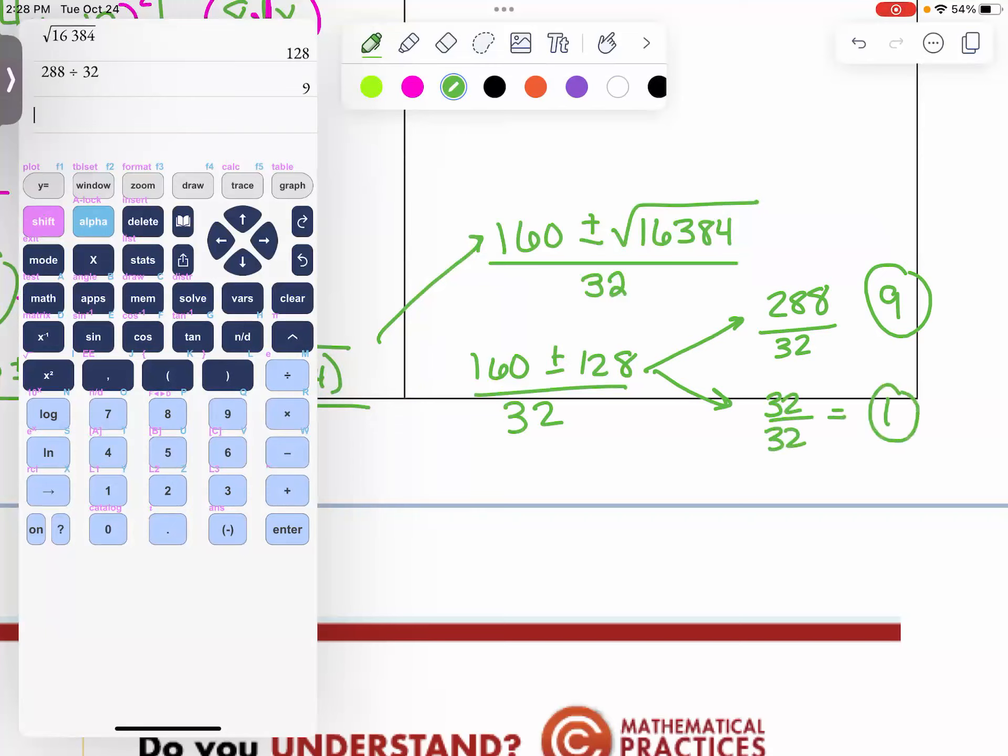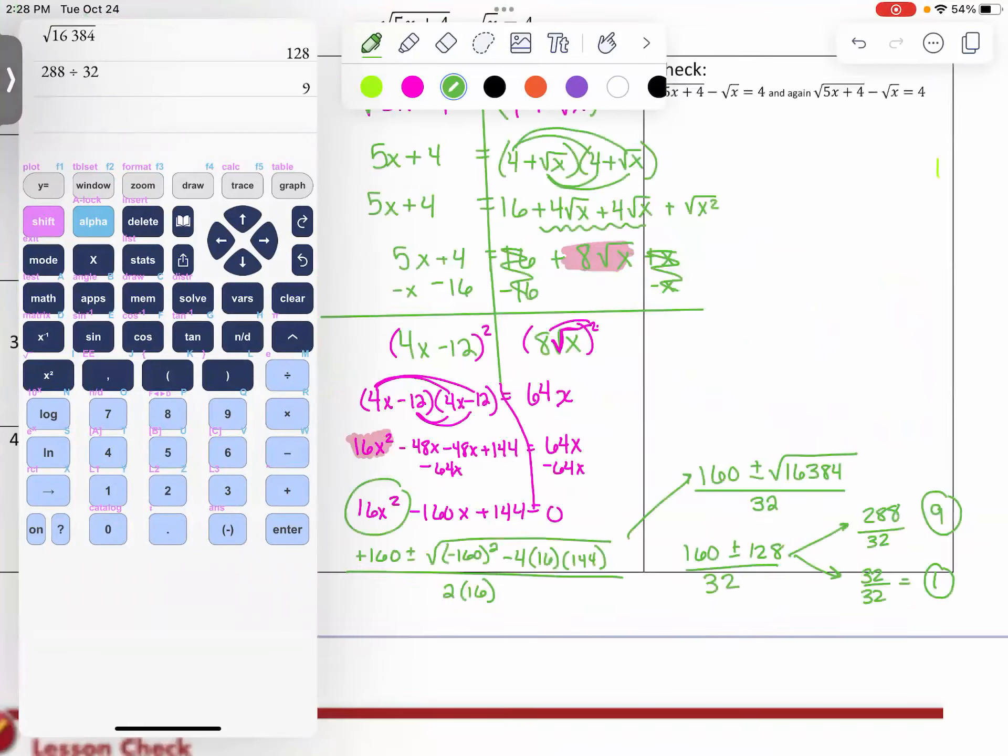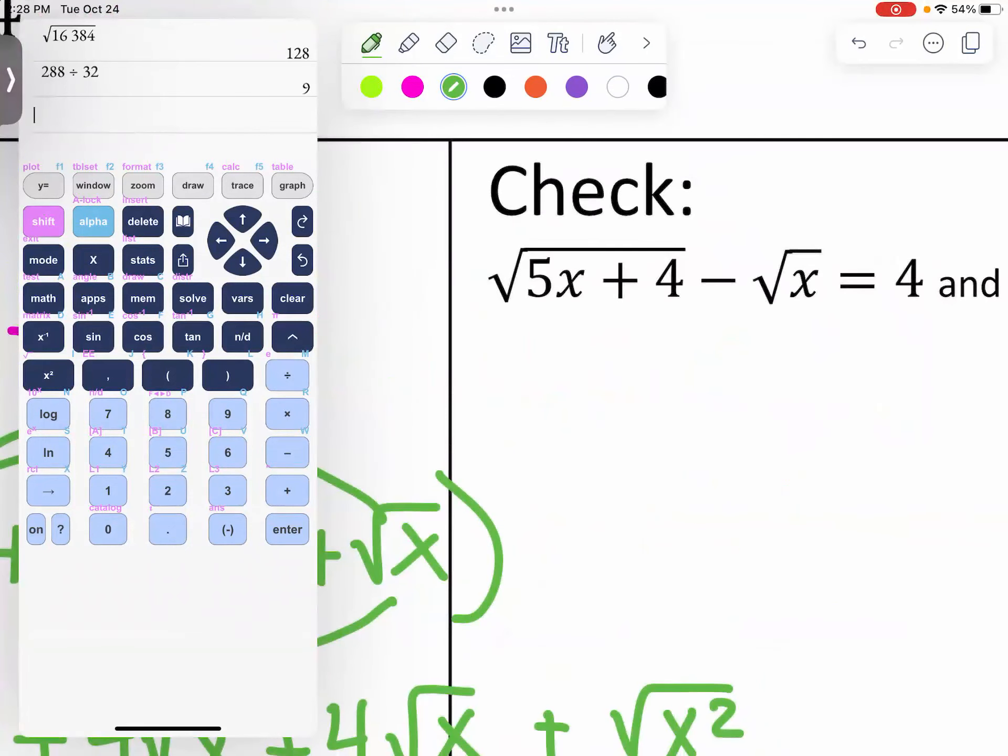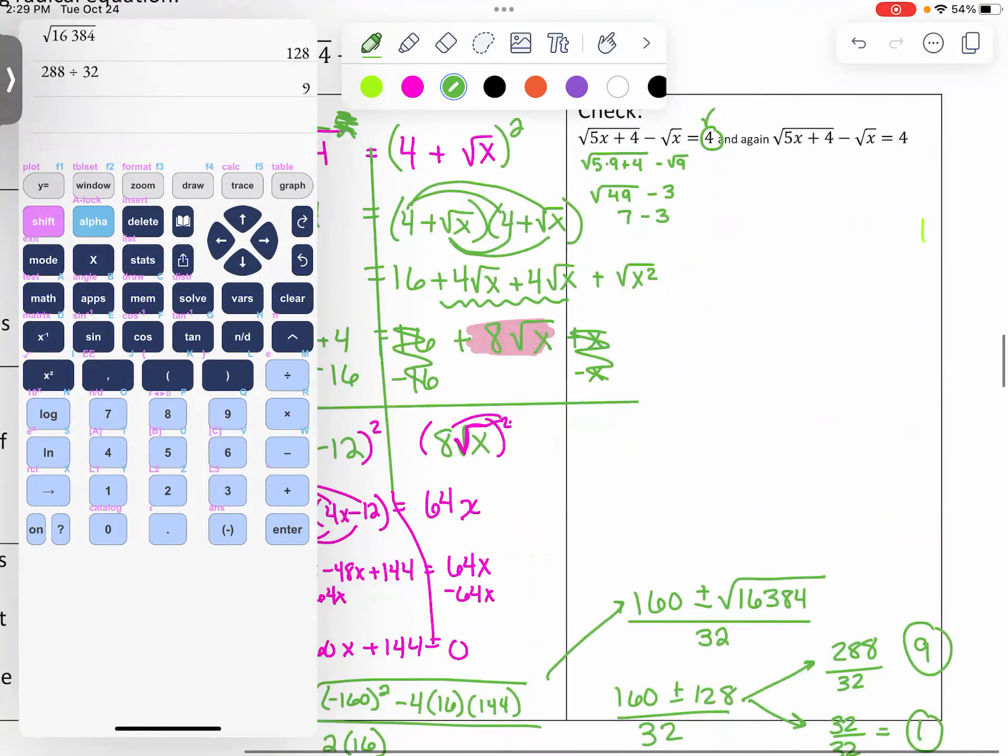We have to check if both of those are correct. We have two minutes. We can check these. The equation is up here. We're going to check 9 and 1. I already added them in. Let's check in 9. 5 times 9 plus 4 minus the square root of 9. And we want to get 4. 5 times 9 is 45 plus 4 is 49. Minus what's the square root of 9? 3. So, that's 7 minus 3. That equals 4. Boom. 9 is a correct answer.